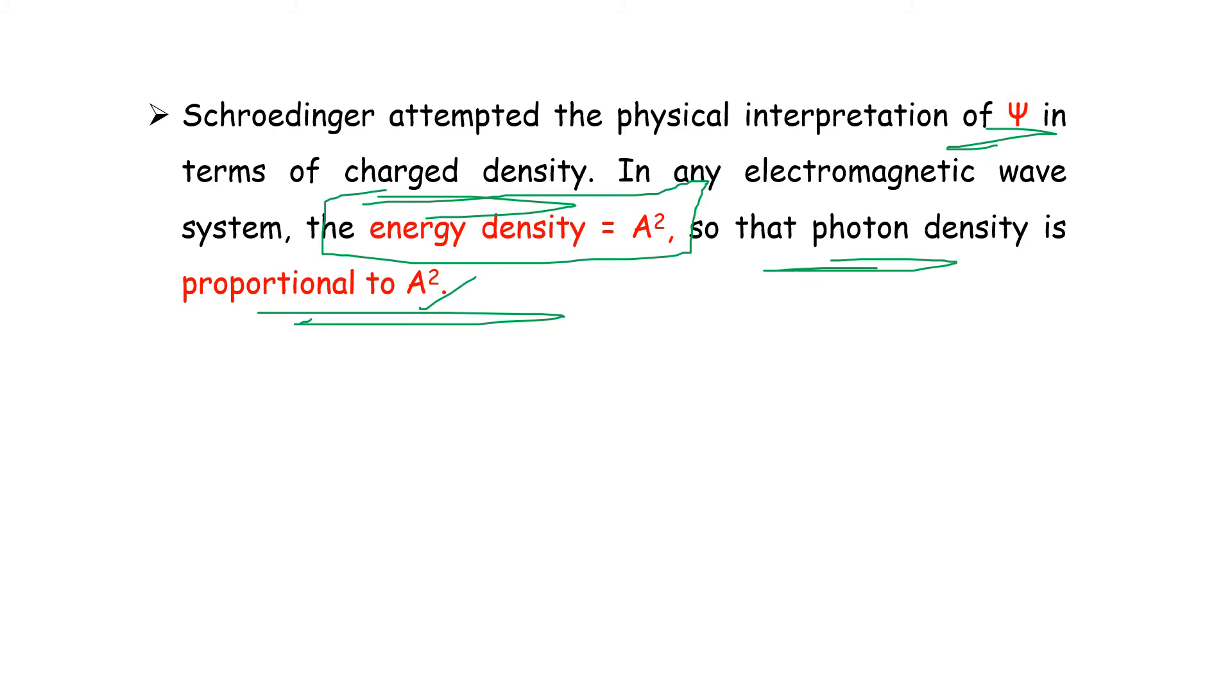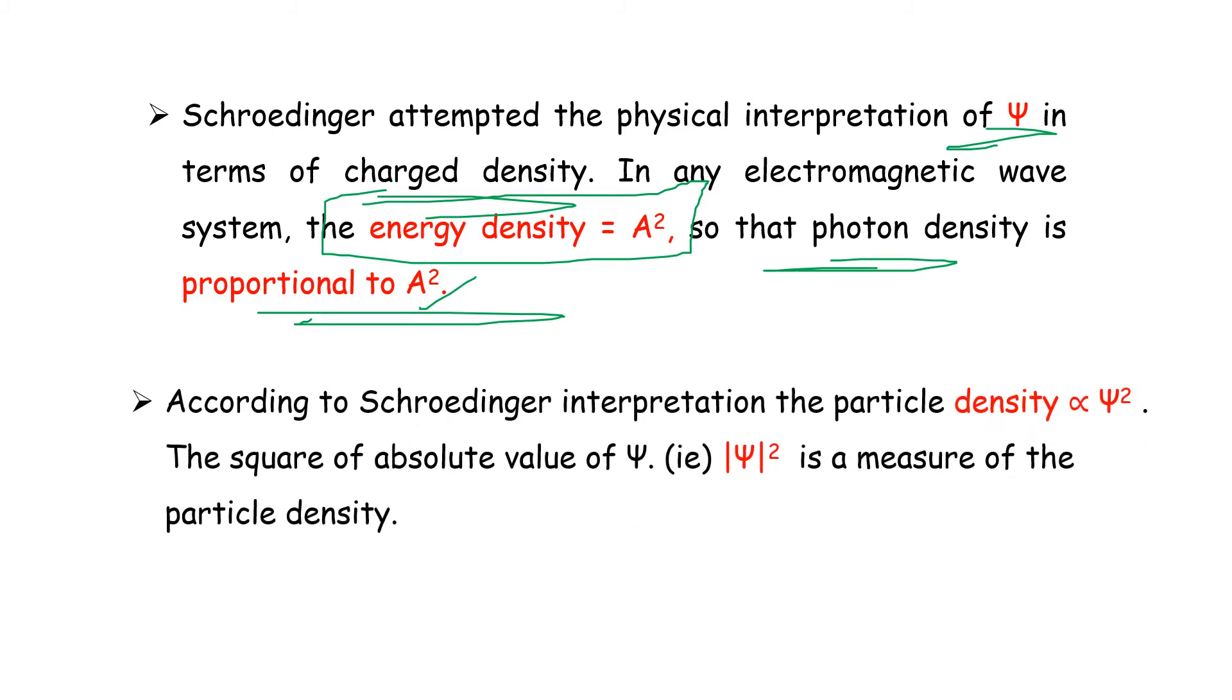According to Schrödinger interpretation, the particle density is directly proportional to ψ². This is a very important MCQ topic. According to Schrödinger interpretation, the particle density is directly proportional to ψ².